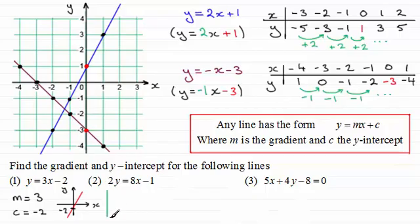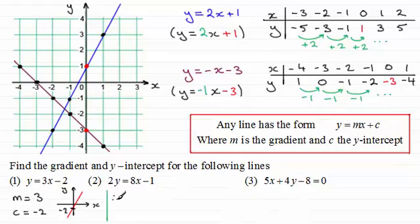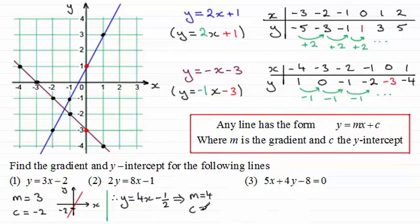Now for the second one, you've got to take a lot more care. It's very easy to make the mistake and think that m is 8 and the c value is minus 1 — it's not, because we've got a 2 in front of the y. Remember, it's just got to be y equals. So what we've got to do is divide both sides by 2. That gives us y equals 8x divided by 2, which is 4x, and then minus 1 divided by 2, which is minus a half. So the gradient m is 4, and where it crosses the y-axis the c value is minus a half.